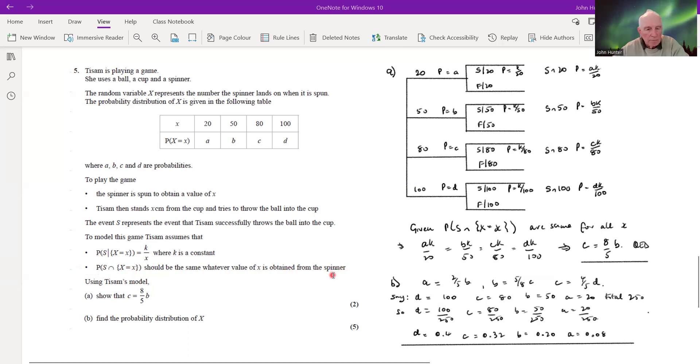So that's the bones of the problem. We're asked using Tisam's model to show that c is equal to eight fifths of b. Now it's a bit of getting your brain around this one, but in order to address this, what we're best doing is drawing a probability tree.